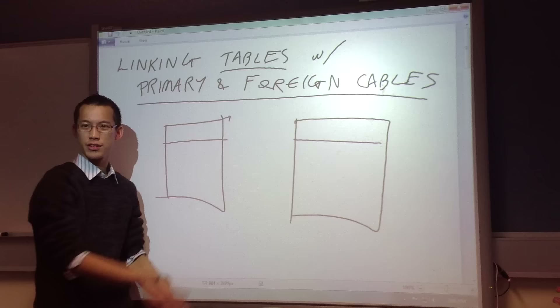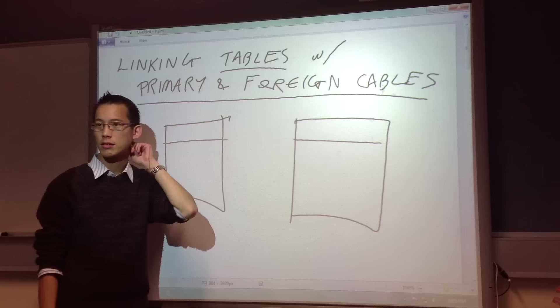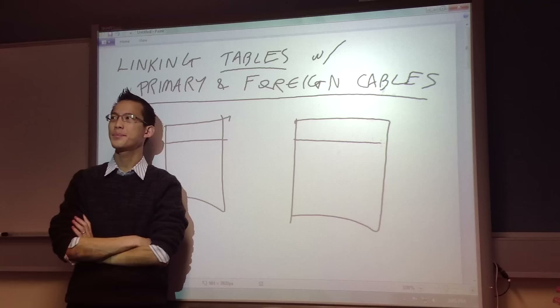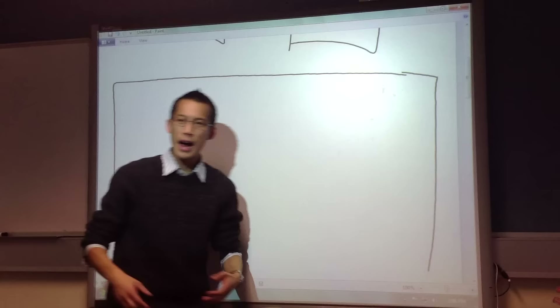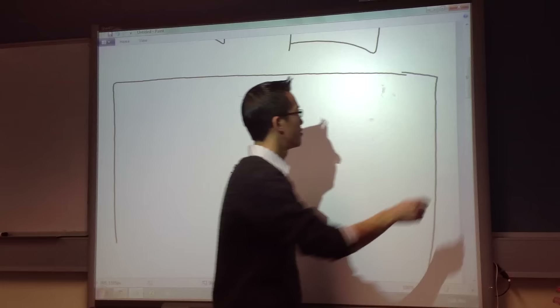The idea is that you can link tables using these somehow. So how would we do this? Let me think of an example. Say we run a business and we sell stuff. You mentioned primary and foreign keys up top — let's fix that.